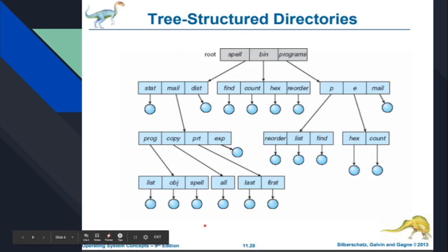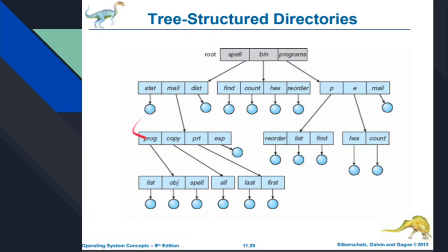The next one is the tree structure directory. As the name implies, it has a root and then subdirectories, and then subdirectories and so on. This is an extension of the two-level directory — in the two-level directory only two levels exist, but here there are multiple levels of directories. Every file has its own unique path. To reference a file, you have to specify the full path — for example, spell, then DST, then PRT, then the file name — going through the unique path to reference that file.